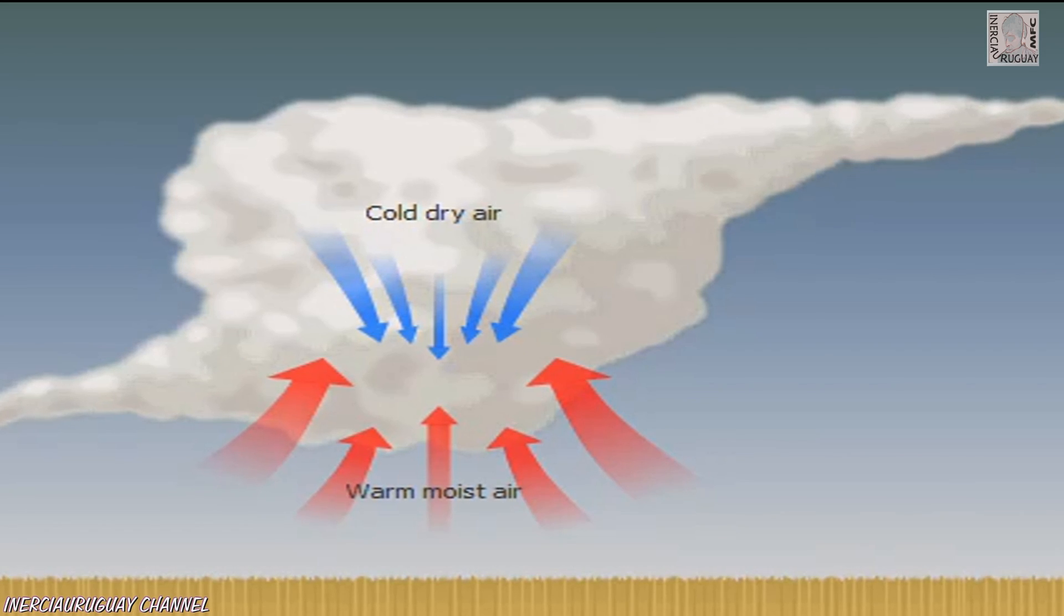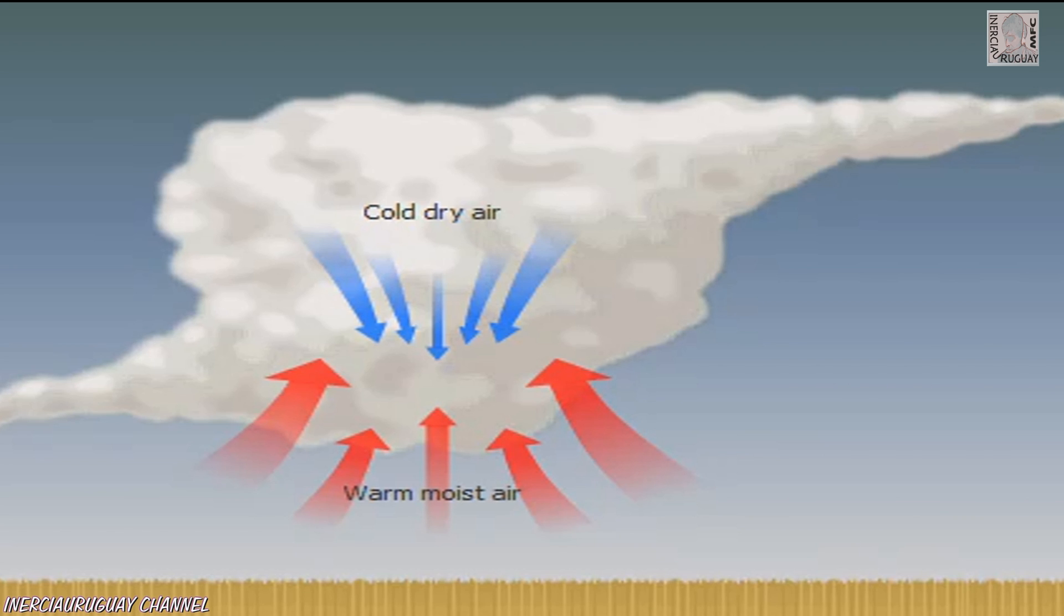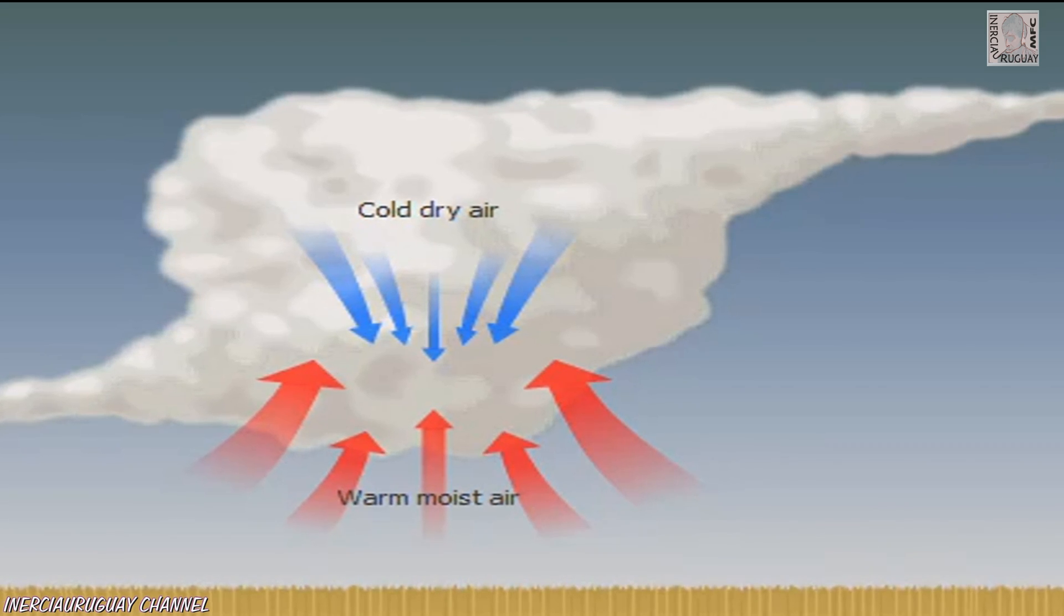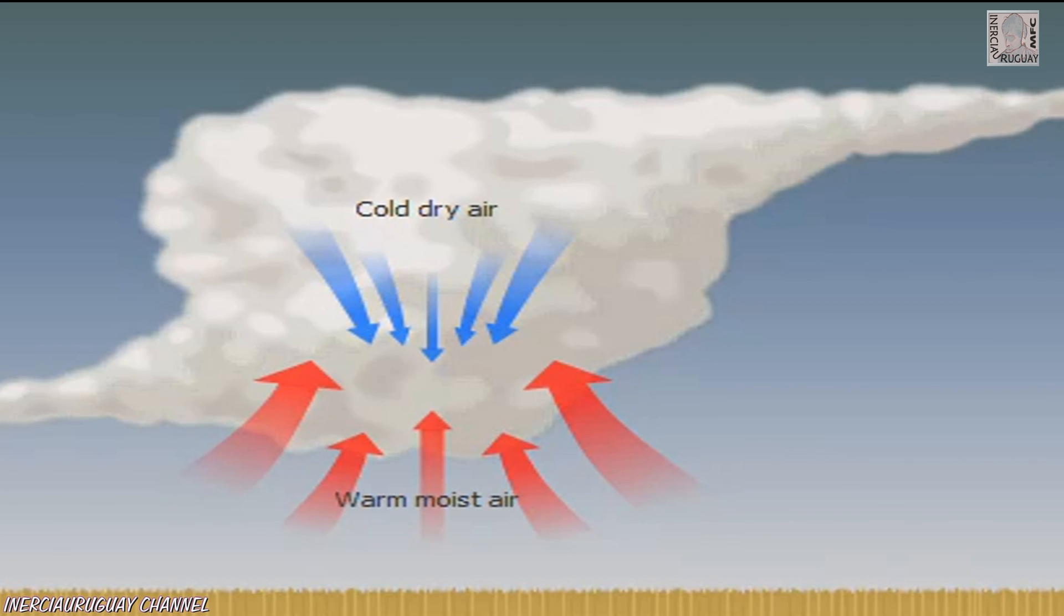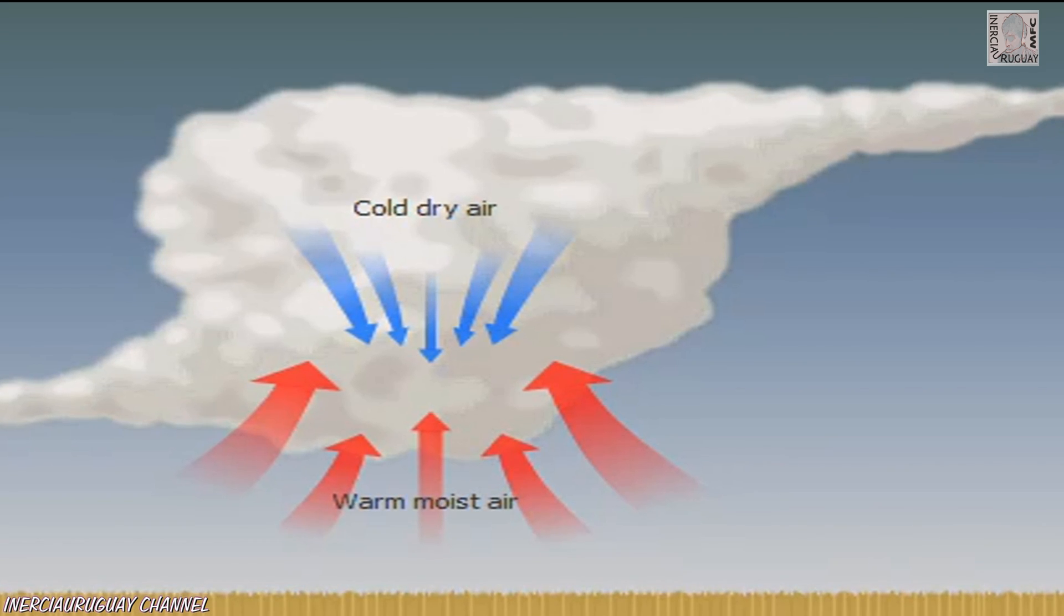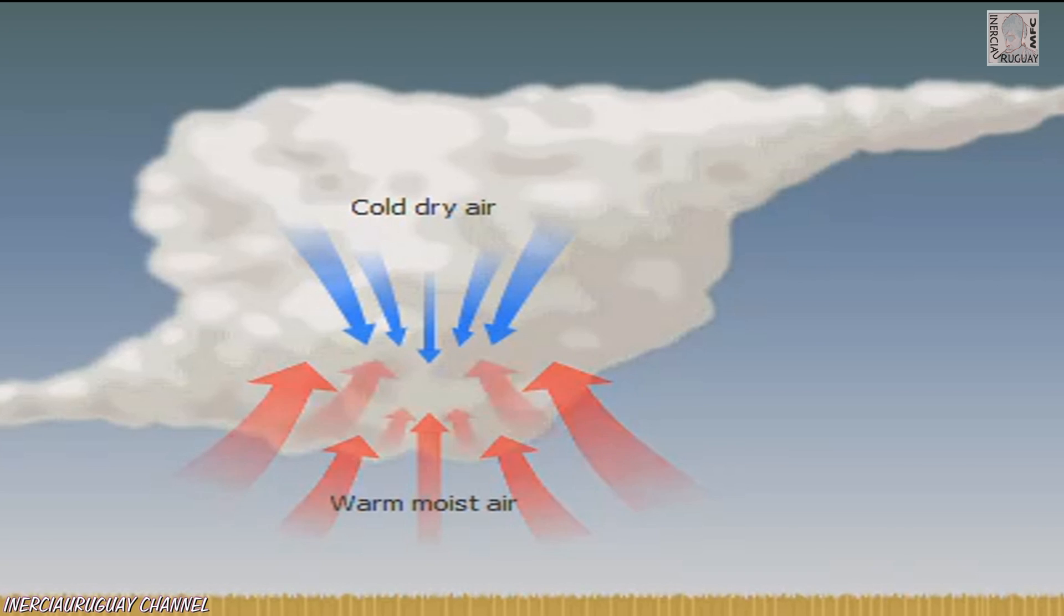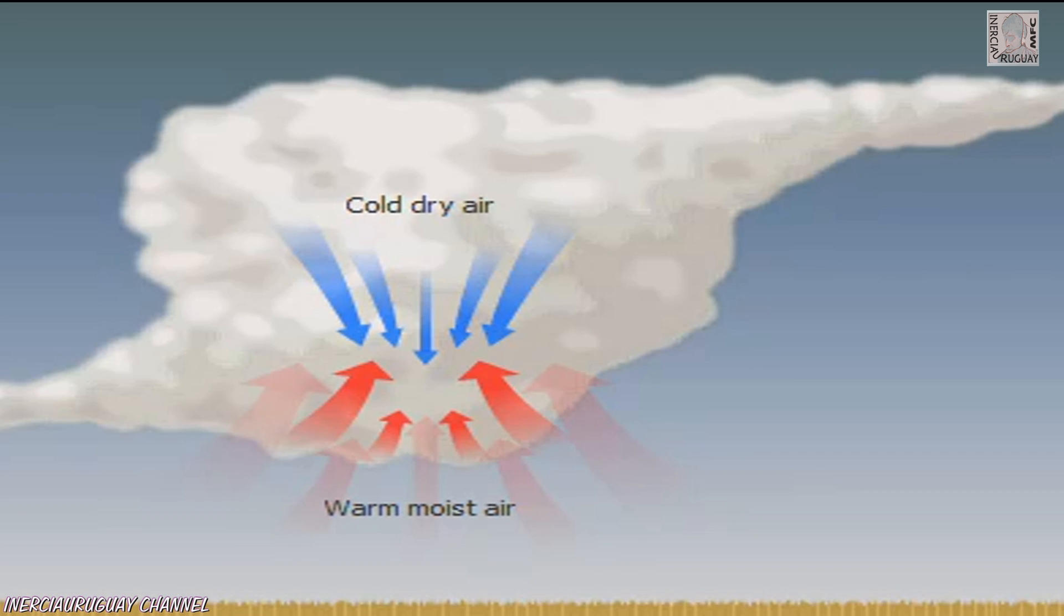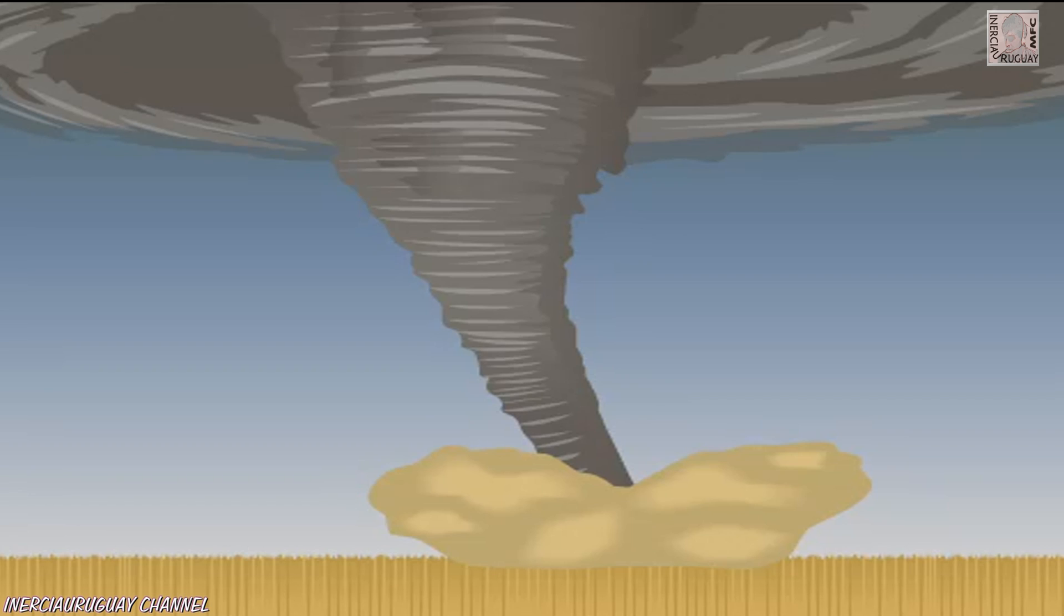Scientists aren't exactly sure how tornadoes form, but think they usually begin when an updraft of warm, moist air rises rapidly through cold air near the top of the cloud. As this happens, more warm air rushes in to replace it, and colder air is forced downward. The interaction of warm and cold air causes the updraft to rotate, forming a vacuum cleaner-like funnel which sucks air and objects up into it.